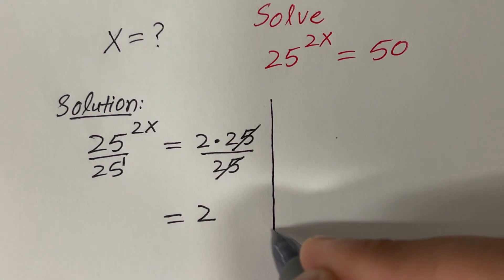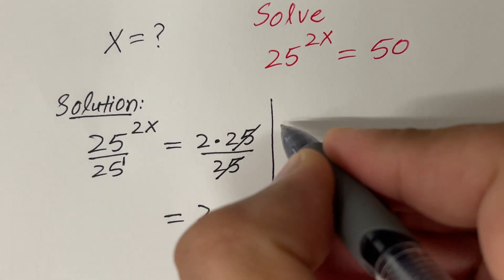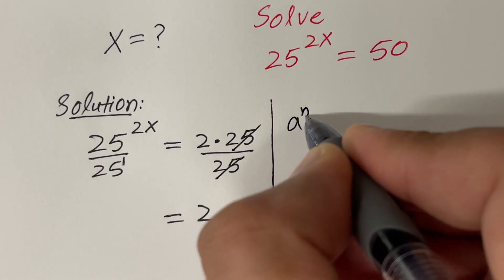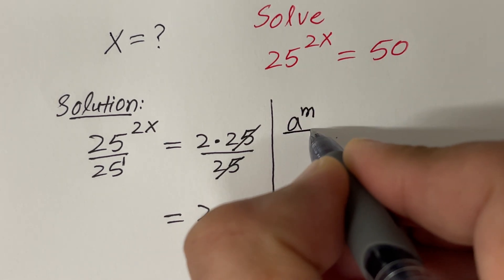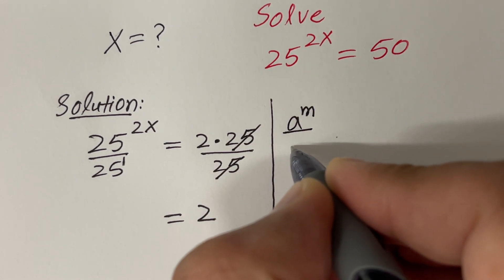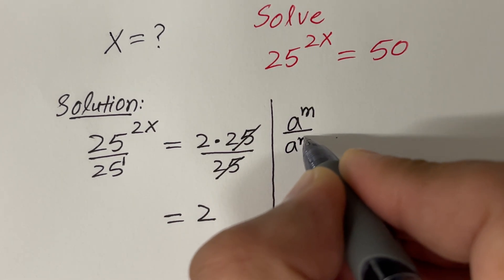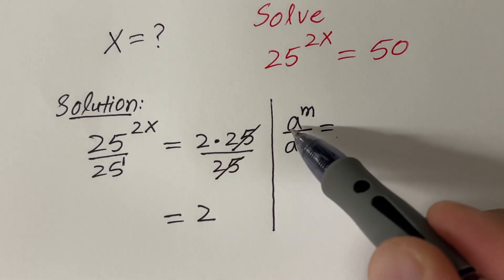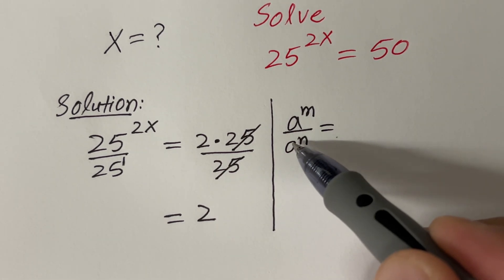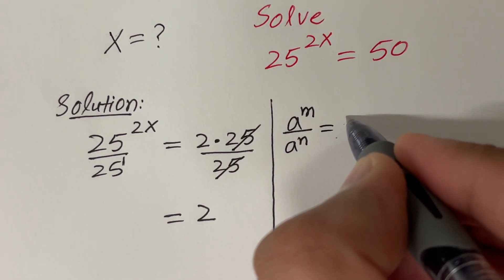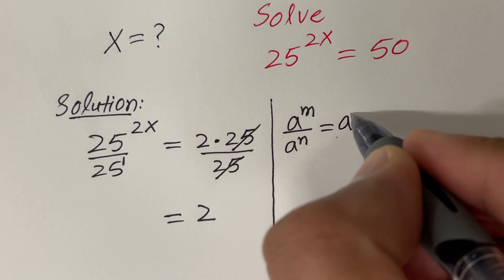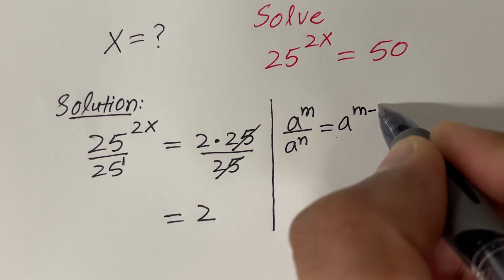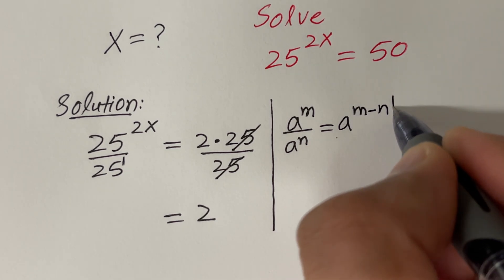Now let's use this property that says a raised to the power m divided by a raised to the power n — if the bases are the same and you are dividing, then you have to subtract the exponents.